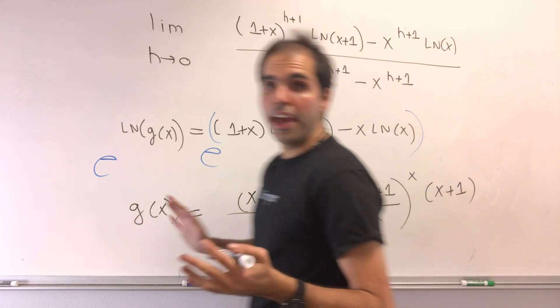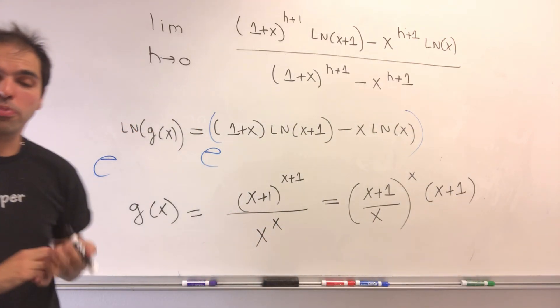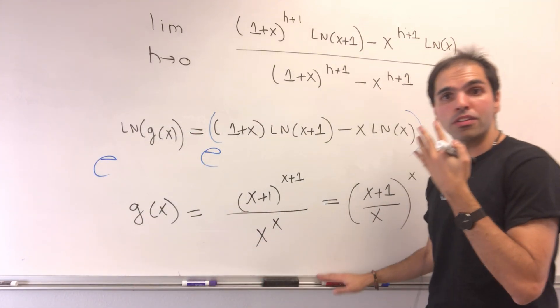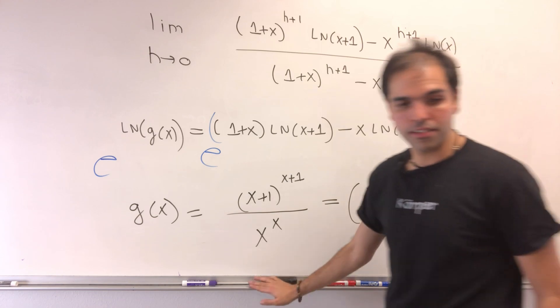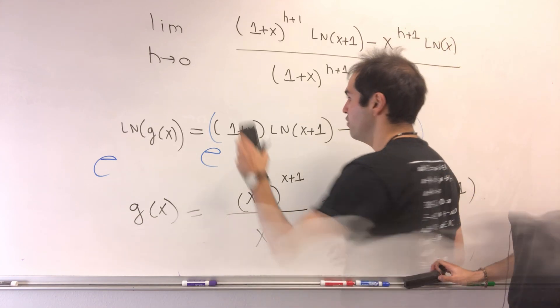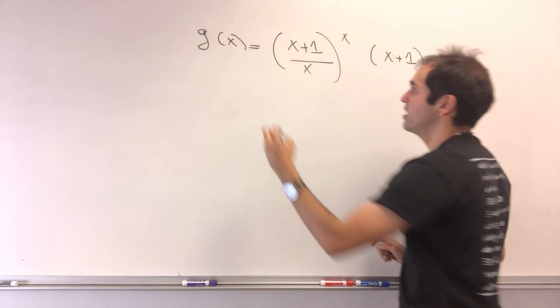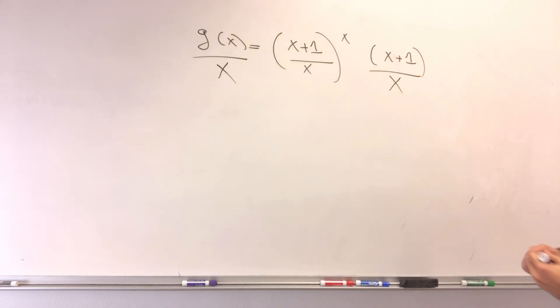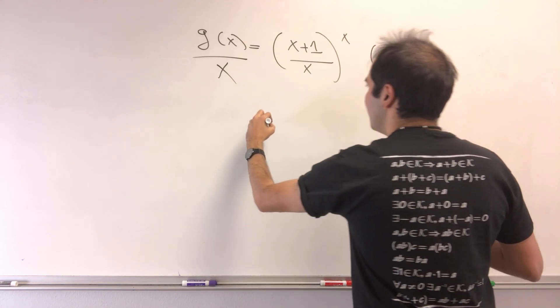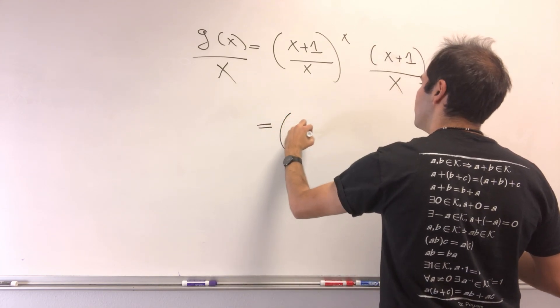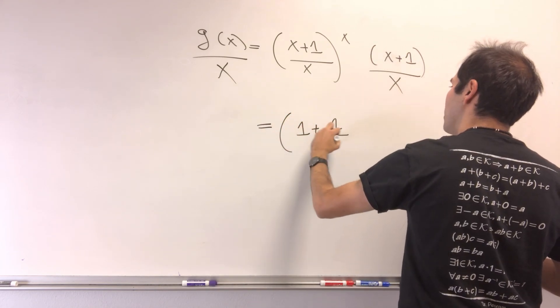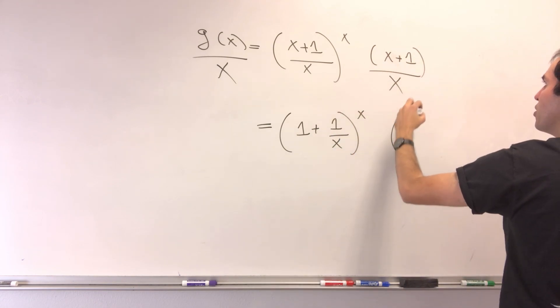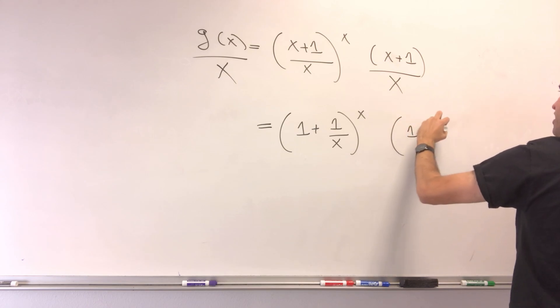But, again, we're not quite done, because the problem didn't ask about g of x. It asks about g of x over x. So then, what we have, g of x was this expression, so dividing by x, g of x over x becomes this divided by x. But then, notice you can simplify this to 1 over 1 over x to the x. And this, if you want, becomes 1 plus 1 over x.